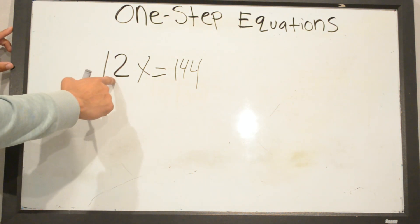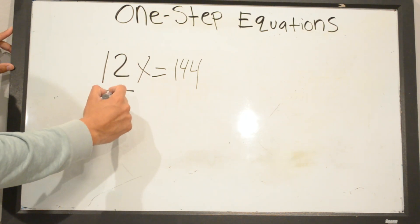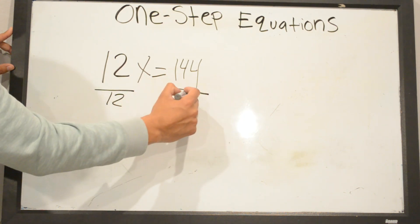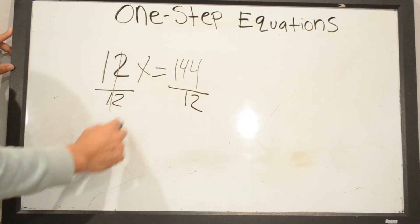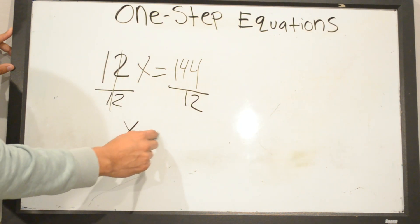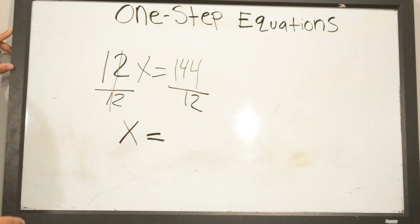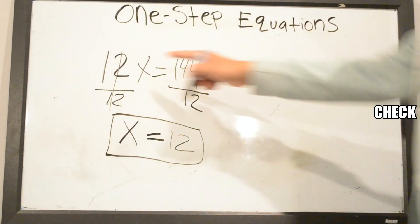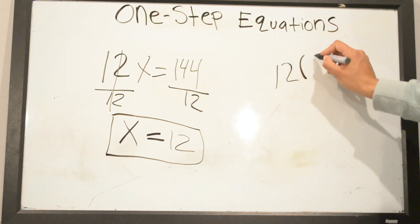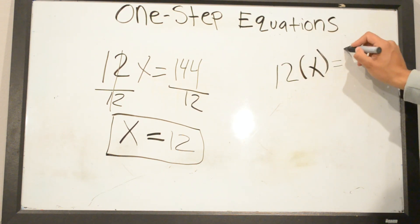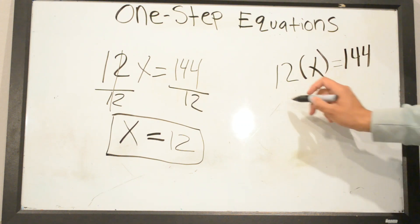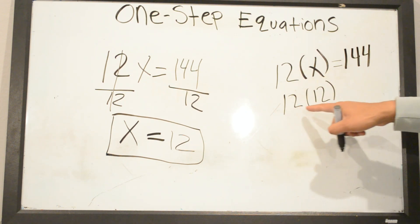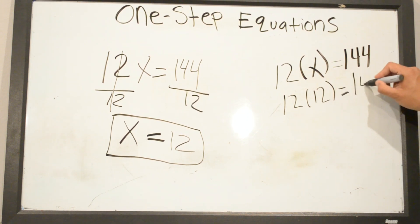12X equals 144. The opposite of multiplication is division, so to get rid of 12X we divide by 12. Whatever we do on one side of the equal sign we have to do on the other side. 12 divided by 12 cancels, leaving X by itself. 12 goes into 144 twelve times, so X equals 12. To check: 12 times 12 equals 144.